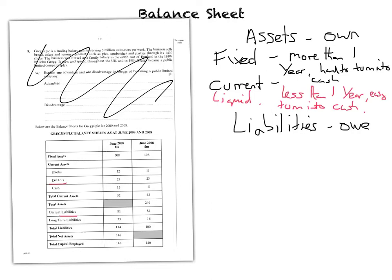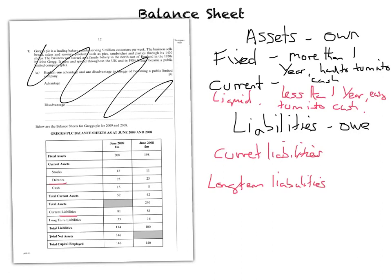There are two types of assets and there are two types of liabilities. There are current liabilities. Now, it would be much easier if they called them fixed liabilities, but they don't - they call them long-term liabilities. The theory is exactly the same: current liabilities have to be paid back in less than a year, and long-term liabilities have to be paid back in more than one year. So those are the four key terms you need to know.